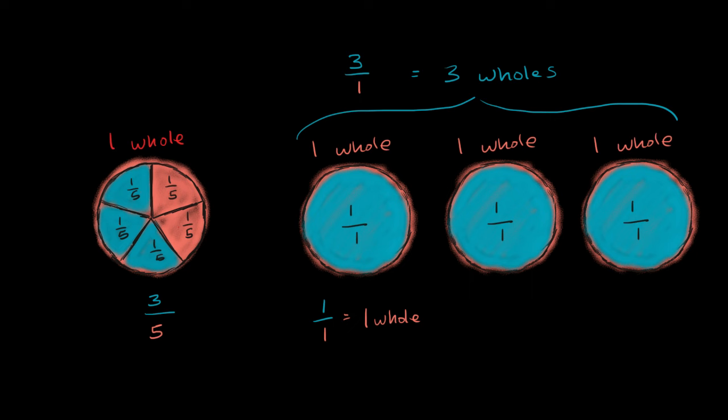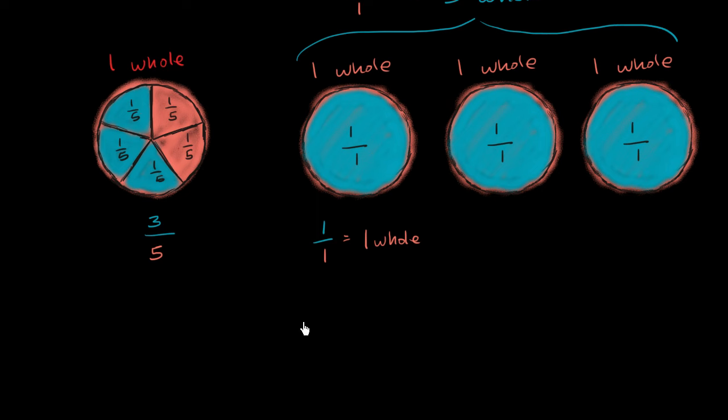And let me emphasize that. Let me draw this on a number line. So, let me go all the way to 3. So 0, 1, 2, and 3.